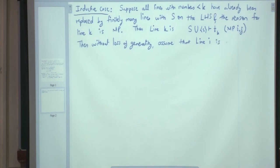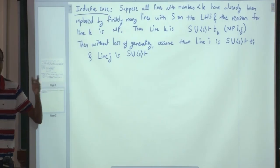assume that line I is S union singleton S proves T_I. And, line J is S union singleton S proves, we cannot say T_J. That's where we had to make a choice. I said, without loss of generality. Either line I would be something implies something, or line J would be something implies T_K.